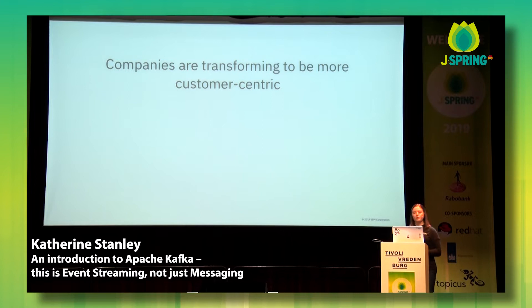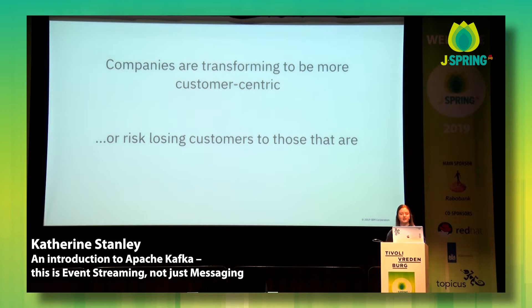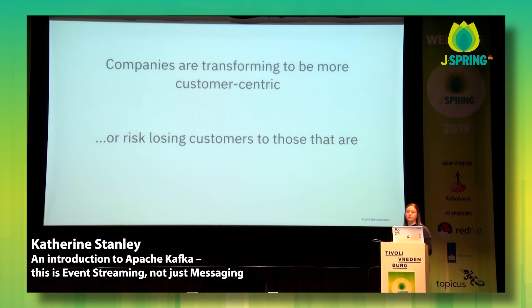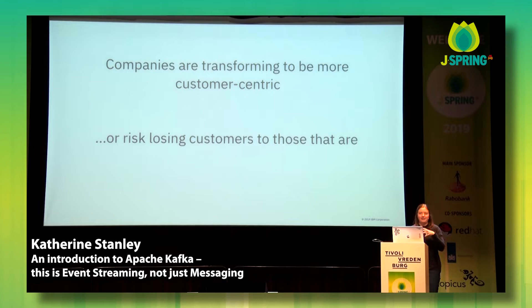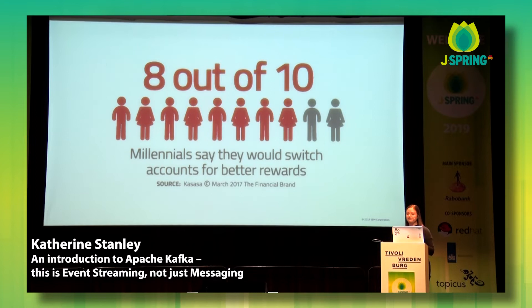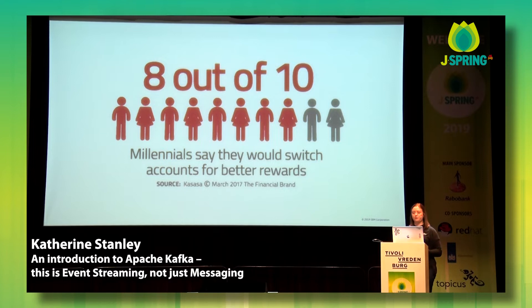So a bit of context. Companies are transforming to be more customer-centric or risk losing customers to those that are. If you think back to the last time you downloaded a new app or picked a new service, did you pick the one that had all the features listed, or did you pick the one you felt would work best for you? Companies are really having to think about context and not just providing something that has function but that really works for particular customers. Eight out of ten Millennials say they would switch accounts to get better rewards, so making this change is really important.